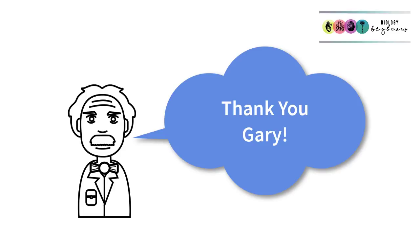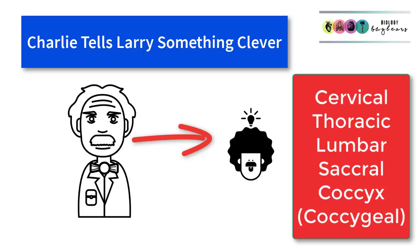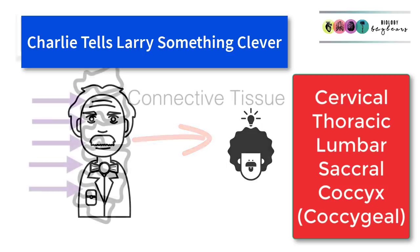Gary has come up with a great rhyme to help us remember them — thanks very much Gary. The rhyme is: Charlie Tells Larry Something Clever. Charlie is the cervical, Tells is the thoracic, Larry is the lumbar, Something is the sacral, and Clever is the coccyx or coccygeal vertebrae.